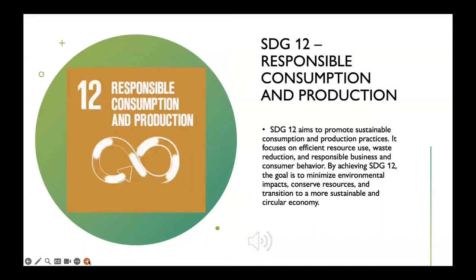SDG 12: Responsible Consumption and Production focuses on promoting sustainable patterns of consumption and production to ensure more efficient use of resources, reduce waste, and minimize environmental impact. The goal targets the reduction of food loss and waste, promotion of sustainable procurement and supply chains, and dissemination of information and awareness about sustainable lifestyles. SDG 12 emphasizes the importance of implementing sound environmental policies, integrating sustainability into business practices, and fostering responsible consumer behavior. By achieving SDG 12, the aim is to promote sustainable consumption and production patterns contributing to conservation of resources, protection of ecosystems, and transition to a more sustainable and circular economy.